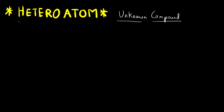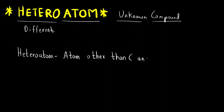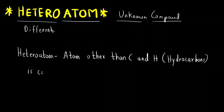What exactly is a heteroatom? Hetero means different — heteroatom means a different atom. More precisely, a heteroatom is an atom other than carbon and hydrogen. Compounds that contain only hydrogen and carbon are called hydrocarbons — hydro means hydrogen and carbon. So any atom other than carbon and hydrogen is called a heteroatom.